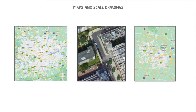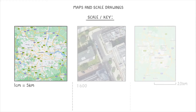Something else that all scale diagrams or maps should have is some kind of scale or key, which allows you to work out the real-life distances that the images represent. There are a few different ways they can do this, but the main ones are these three. This first type is the easiest to work with — it just means that every one centimetre on your map or drawing represents five kilometres in real life. So two centimetres would represent 10 kilometres, three centimetres would represent 15 kilometres, and so on.